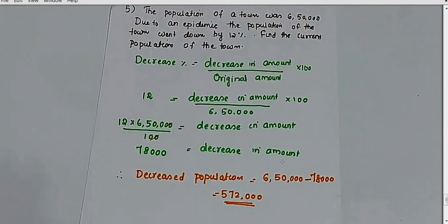Decrease is 12%, so we write 12 = decrease in amount upon 6,50,000 multiplied by 100. After cross multiplication: 12 multiplied by 6,50,000 upon 100 = 78,000. So 78,000 is the amount by which the population decreased. We need to be careful solving this step by step — the decrease in population is 78,000.